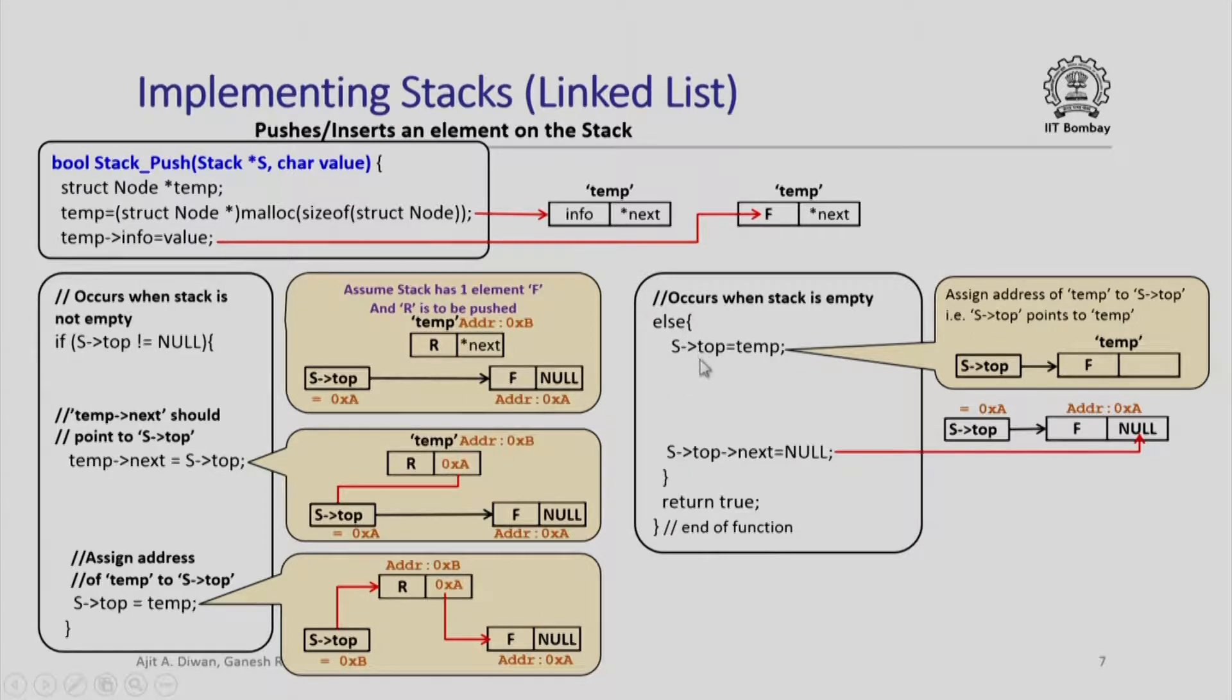What do we do here? Very simple, we have the temp node which contains the information f, it has some garbage in the pointer part. We first make s top to point to this node. So temp is assigned to s top. Second, the pointer in the node itself must be null. So it is set to null here. That is it. Now this becomes my stack, s top points to this node and this node in turn does not point to anything. So now my stack has one element.